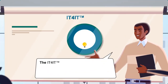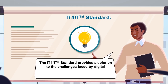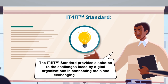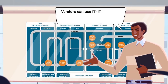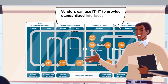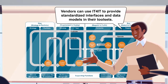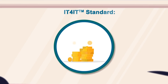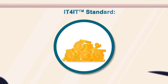The IT for IT standard provides a solution to the challenges faced by digital organisations in connecting tools and exchanging information. Vendors can use IT for IT to provide standardised interfaces and data models in their tool sets. In contrast, customers can use the standard to analyse their current and future state to direct investment in tool functionality and interfaces.